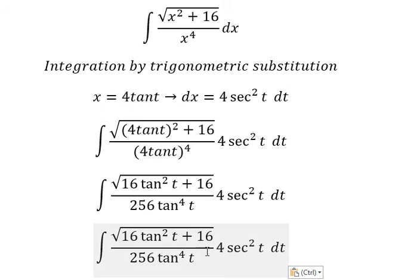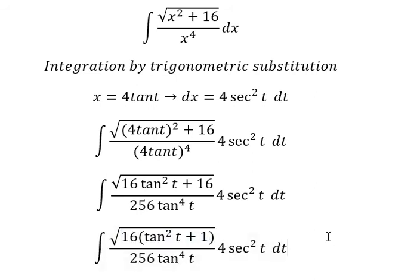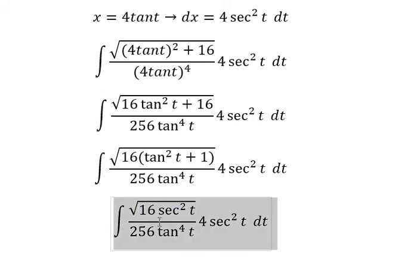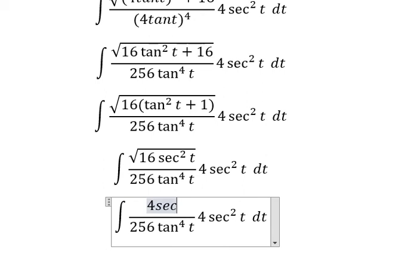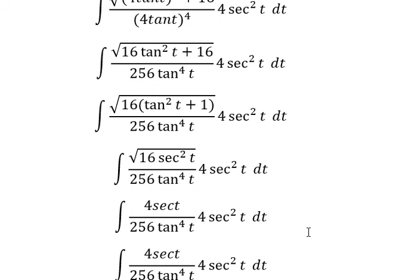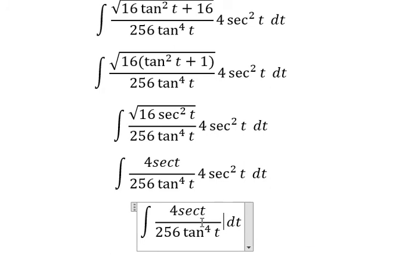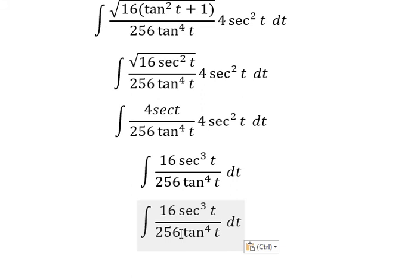We have 16 tan⁴(t) after factorization. This gives us 256 tan²(t). Under the square root we get 4 sec(t). Combining 4 sec(t) with 4 sec²(t) gives 16 sec³(t). Simplifying 16 over 256, we get 1 over 16.